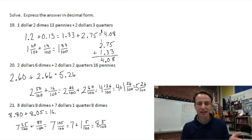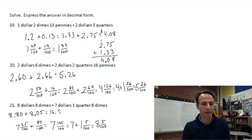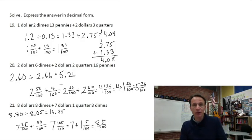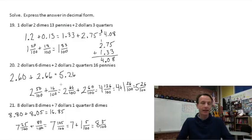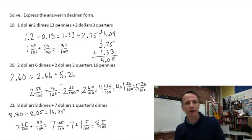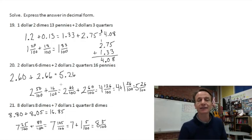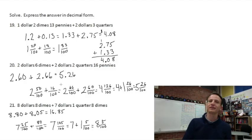Now add: 8.80 and 8.05. 8 + 8 = 16. 80 cents + 5 cents = 85 cents. Express the answer as a decimal: 16.85. That's it — you've completed another homework time! Nice work, see you next time.